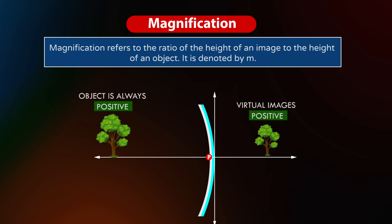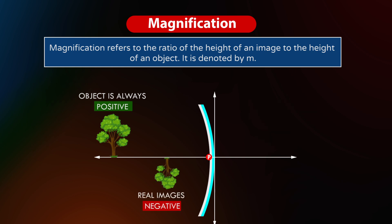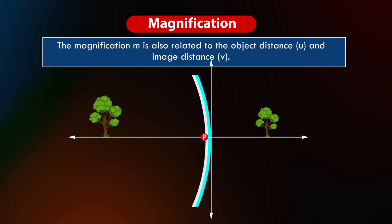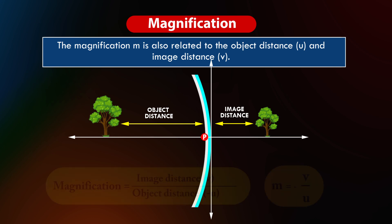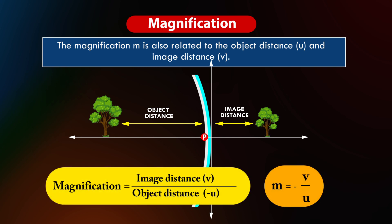The height of the image is taken as positive if the image is virtual, and negative if the image is real. We can also find magnification by comparing the image distance and object distance. Since image distance is the distance between the mirror and the image, and object distance is the distance between the mirror and the object, magnification M = −v/u.